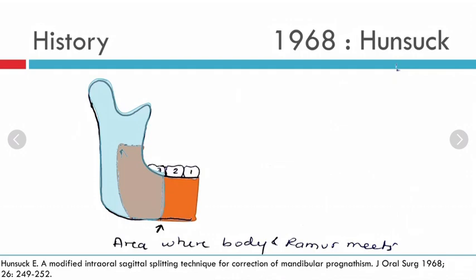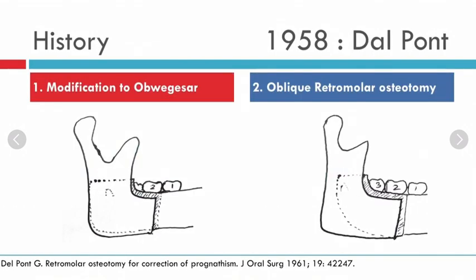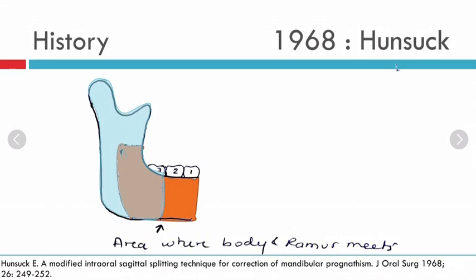In 1968, Hansak modified the osteotomy. Rather than placing the buccal cortical cut between the first and second molar as Dalpont did, Hansak placed the buccal cut between the second and third molar — at the junction of the body and ramus. The lingual cut remained similar to Dalpont's. You can see that across all modifications, the lingual cut stays largely the same, while each modification changes the position of the buccal cut.